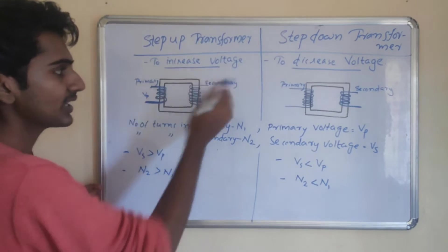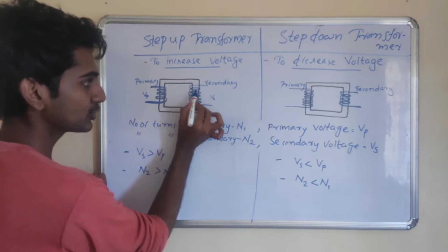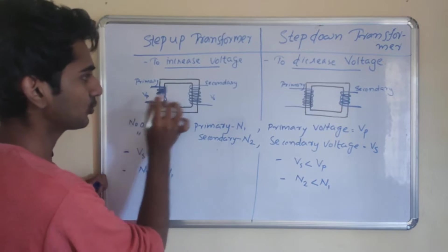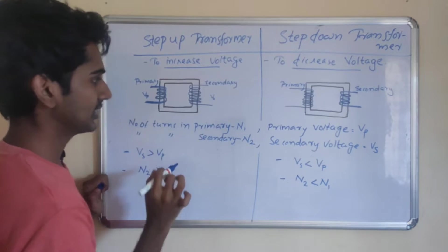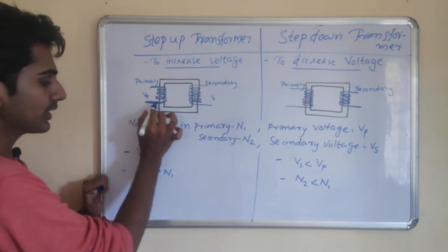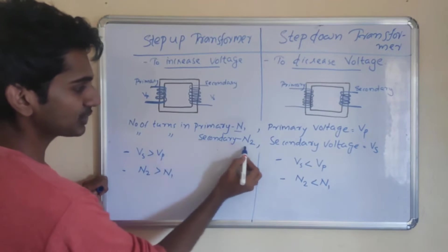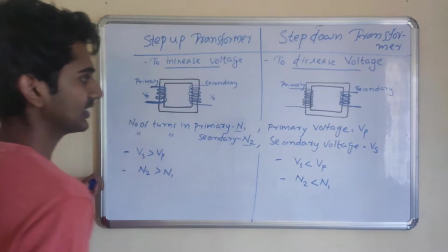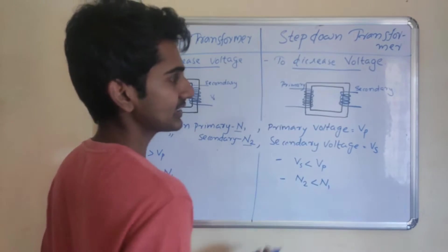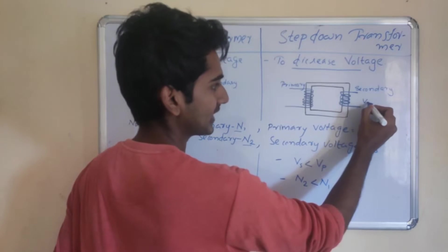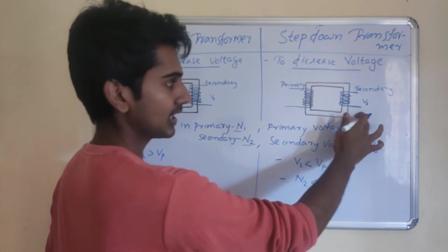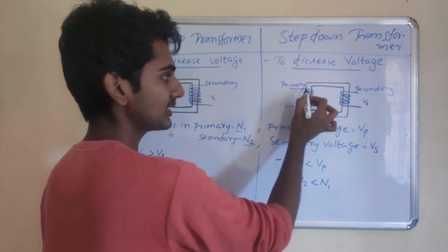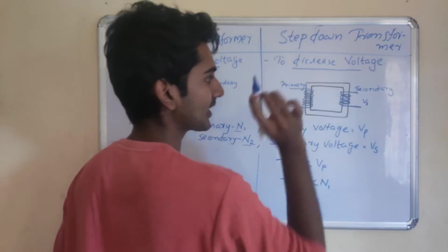The primary coil has N1 turns and the secondary has N2 turns. Vp is the primary voltage and Vs is the secondary voltage. For a step-down transformer, the secondary voltage is smaller than the primary. If the secondary voltage is small, then N2 is less than N1. In a step-down transformer, the primary turns N1 are greater than secondary turns N2.